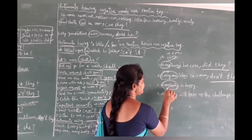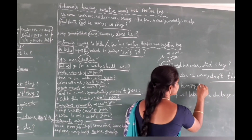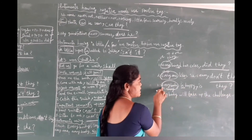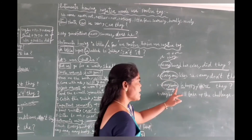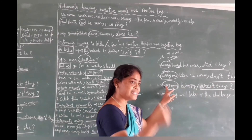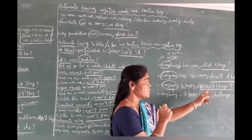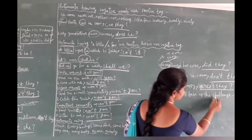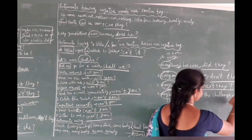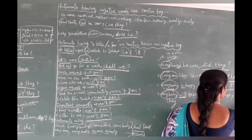Remember: for 'everybody', we treat it as plural and use 'they'. Even if the auxiliary in the statement is 'is', the tag uses 'aren't they' — not 'isn't they' — because the pronoun is 'they' (plural form). Next: 'Anybody will take up the challenge.' Here 'anybody' takes plural form 'they' and the auxiliary is 'will'. Positive statement, so the negative tag is: 'won't they?'